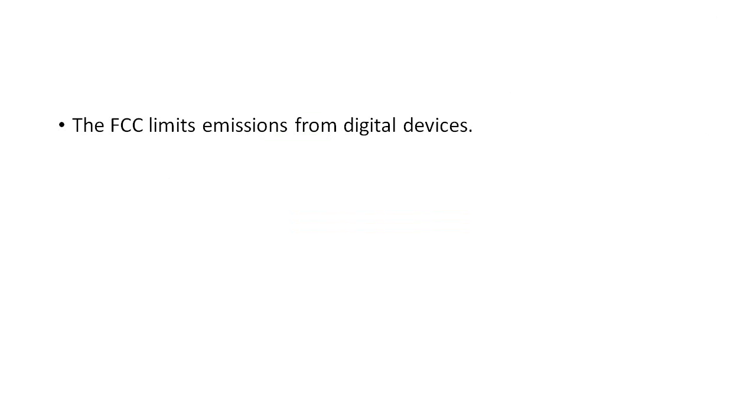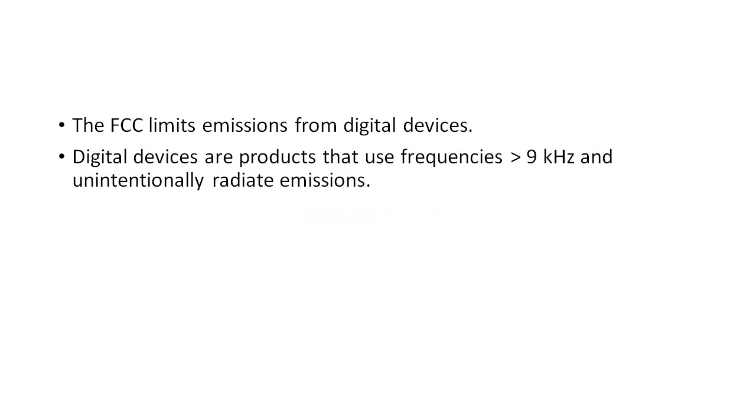The FCC sets limits on the conducted and radiated emissions of digital devices. It defines a digital device as an unintentional radiator that generates and uses timing signals or pulses at a rate in excess of 9,000 pulses per second and uses digital techniques.